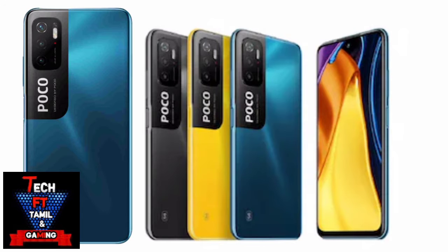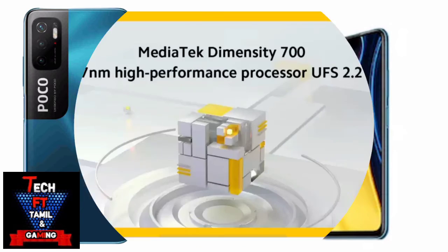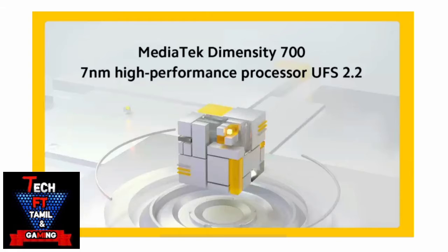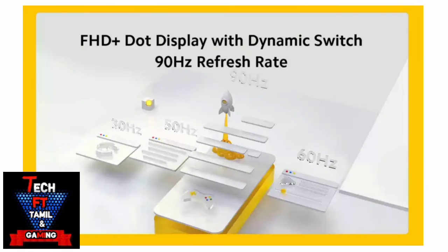There are 2 RAM options. I will show you the full specification. MediaTek Dimensity 700 processor — it is a 7nm processor. UFS storage type is 2.2.